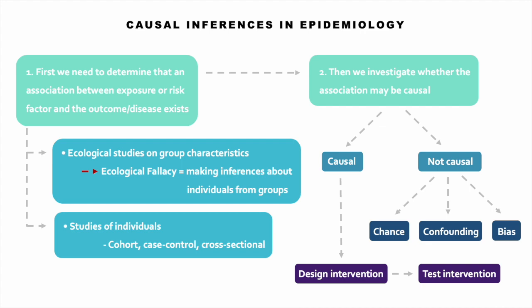If an association between the risk factor and the disease is found, then we investigate whether the association may be causal. If it's not causal, it could be due to chance, confounding, or bias. If it is causal, we could move forward and design an intervention, which we can then implement and evaluate to test if it works to prevent the disease.